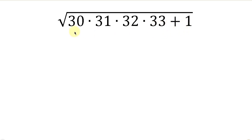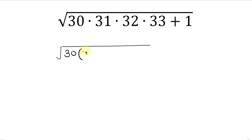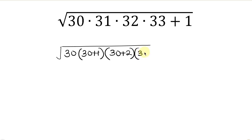Our first step will be for us to simplify. So we have the square root of 30 times 31, which is the same as 30 plus 1; times 32, which is the same as 30 plus 2; times 33, which is the same as 30 plus 3; and then plus 1.